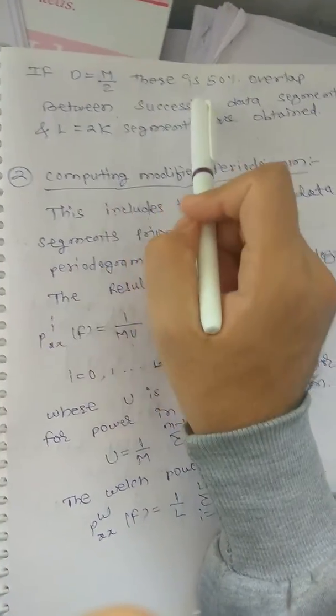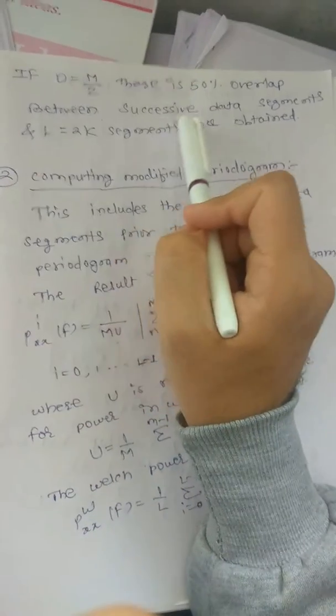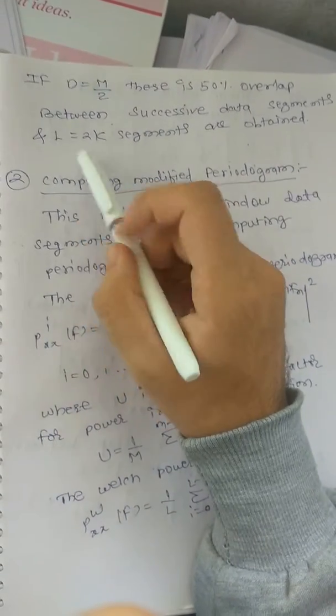If D equals M/2, this is 50% overlap between successive data segments, and L equals 2K segments.